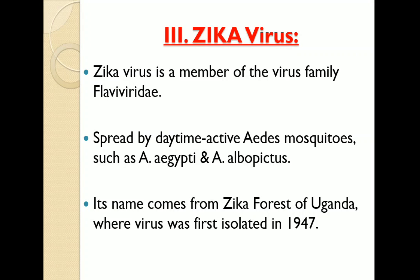The next hemorrhagic fever virus is Zika virus. Zika virus is a member of the virus family Flaviviridae, spread by daytime-active Aedes mosquitoes such as Aedes aegypti and Aedes albopictus. The name came from Zika forest of Uganda, where the virus was first isolated in 1947.